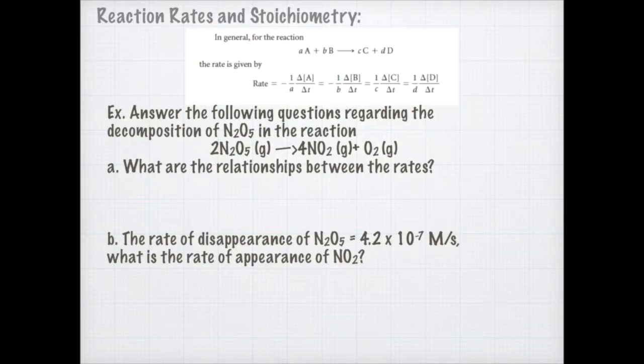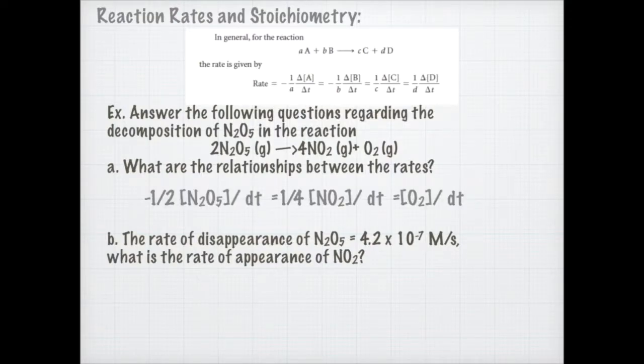Let's look at an example. It asks, what are the relationships between the rates? I know that negative 1 half of the rate of N2O5 is going to be equal to 1 fourth of the rate of NO2, and that's going to be equal to simply the rate of O2.